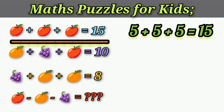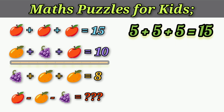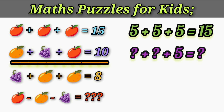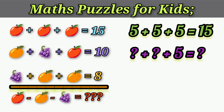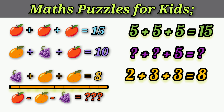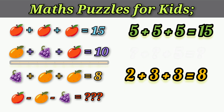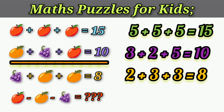Next, second equation: orange plus grapes plus apple equals 10. Apple is 5 rupees, but grapes and orange are unknown. Third equation: grapes plus orange plus orange equals 8. So grapes rate is 2 and orange rate is 3, because 3 plus 3 plus 2 equals 8.